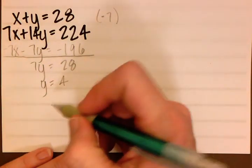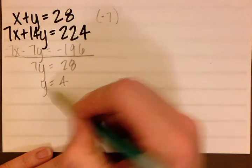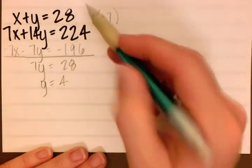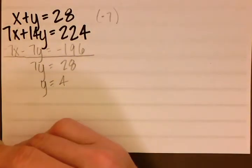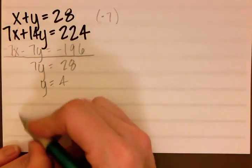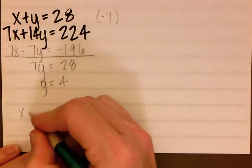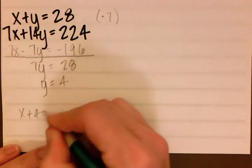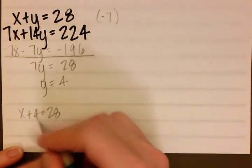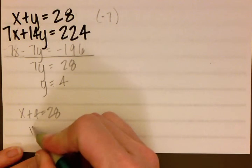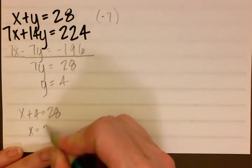Okay. Now all we do is take the y that we've solved for and plug it back into our first formula, which is x plus y equals 28. And that will give us our x. So if we do that, we get x plus 4 equals 28. Subtract 4 from both sides and we get 24.